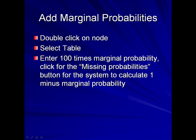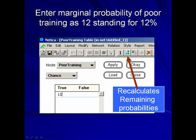To add marginal probabilities, double click on the node. Next, select the table. Then, enter 100 times the marginal probability. Click the Fill Missing Probabilities button for the system to calculate 1 minus the marginal probability. Enter marginal probability of poor training as 12, standing for 12%. Clicking on the icon shown will recalculate the remaining probabilities.